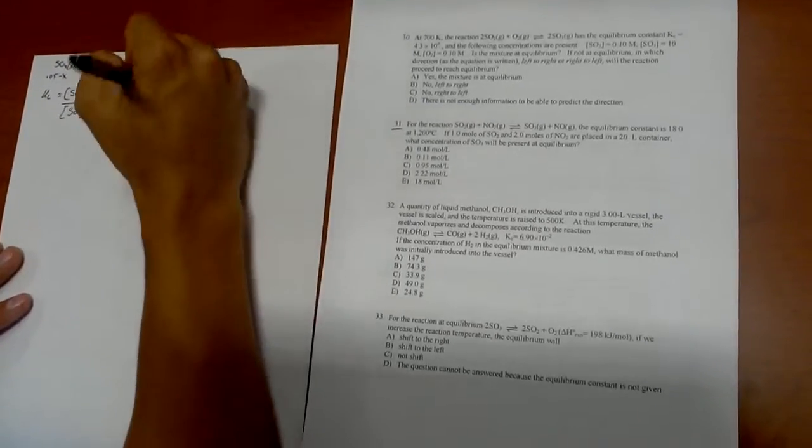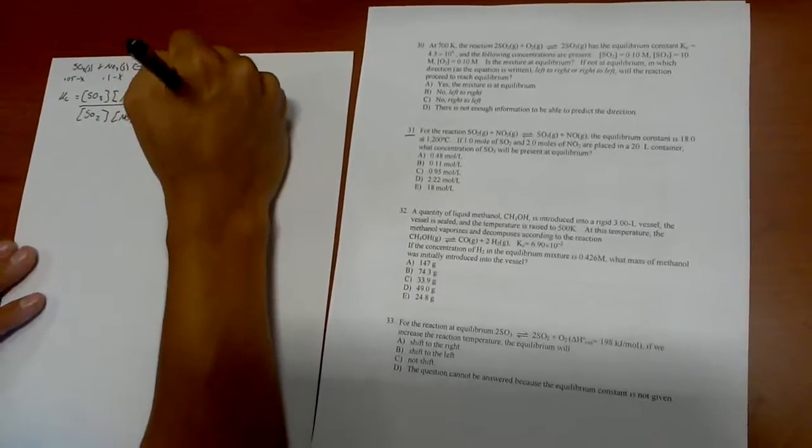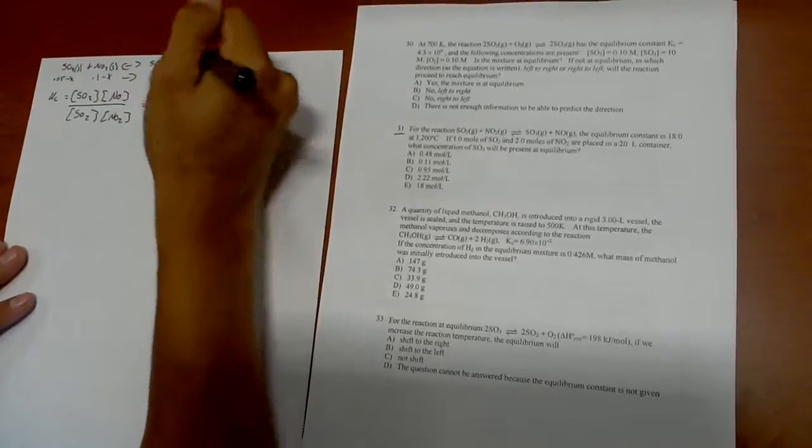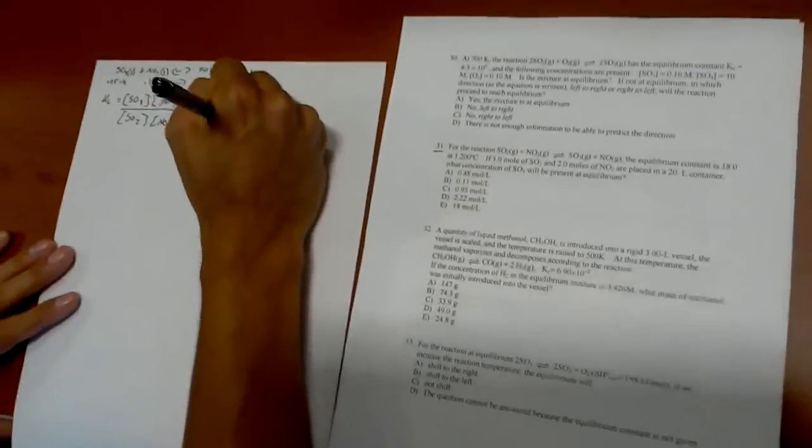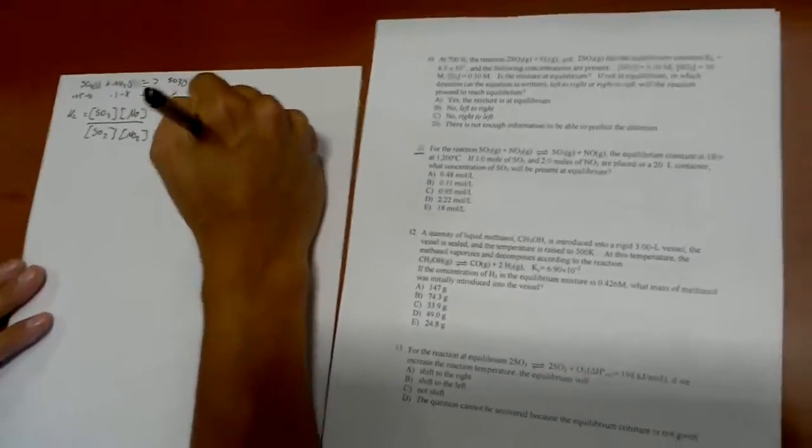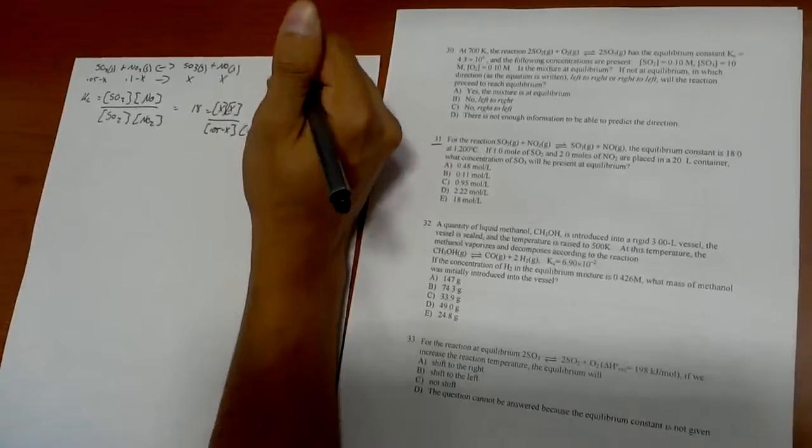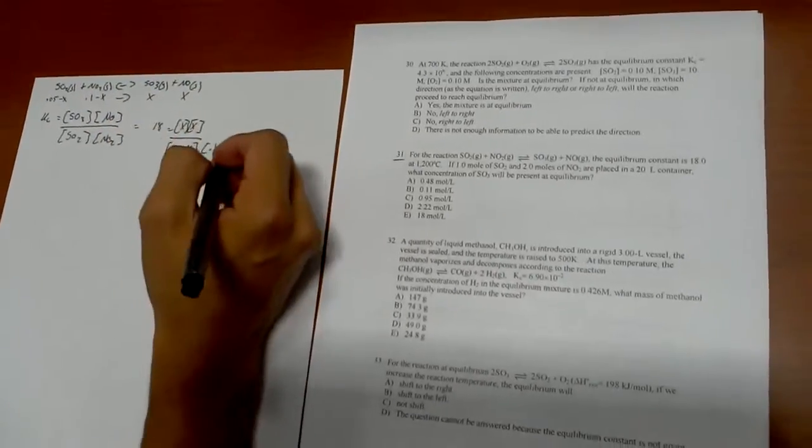...the concentration of SO2 and the concentration of NO2. Now we're still missing parts of this equation but we can write out 18 which is Kc equals x times x representing that we do not have those numbers that we intend to solve for, over 0.05 minus x and 0.1 minus x. Keep in mind those are the moles.